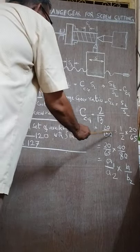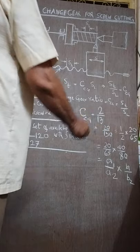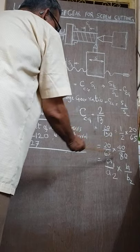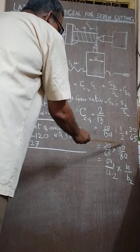We cannot have a gear of 130. So we have to split into compounding. We have to do compounding by breaking it out: 20 by 65 into 40 by 80.